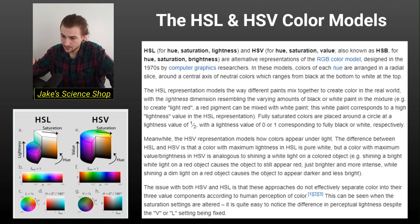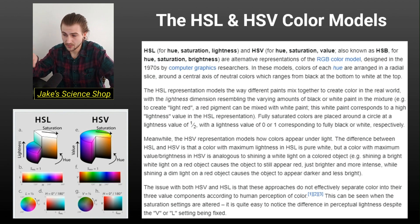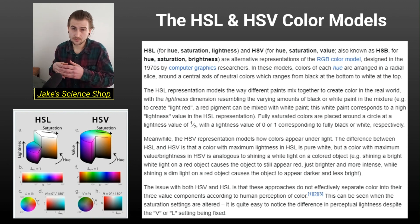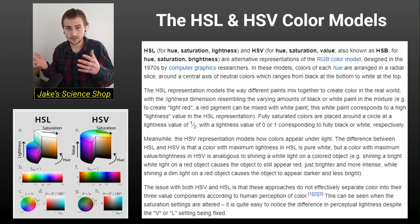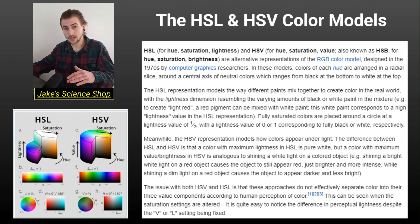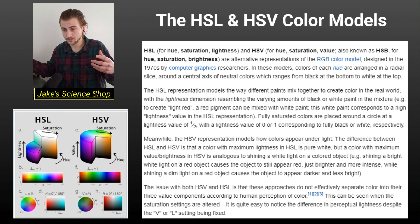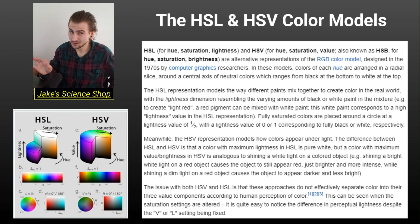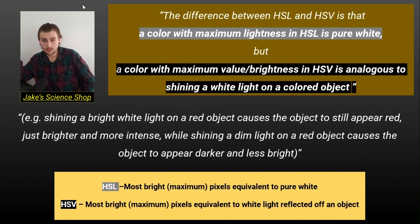Looking at the cylinder diagram, we're talking about the HSB one. The bottom is really dark and the top is not. The center of that circle is quite white — the closer you move to the center, the lighter the color is, the more it resembles pure white. The closer you move towards the bottom, the more dark is included. The farther you move out from the center, the deeper the colors are.